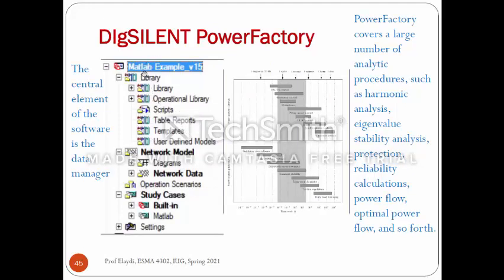اللي عندي أهم شيء هادي المنطقة - بنسميها الـ Data Center تبعي. فيها كل الـ Library الموجودة في الـ Software. هادا Central Element of the Software هو الـ Data Manager. الـ Data Manager فيه كل الـ Library: لـ Transformer، لـ Network، لـ Buses، لـ Renewable Energy، كل شيء موجود عندي. وبقدر أعمل كل أنواع الأنالايسيس: Harmonic Analysis، Eigenvalue Stability Analysis، Protection Reliability Calculation، Power Flow، Optimal Power Flow. والـ Step Size اللي عندي بقدر أتحكم فيه.